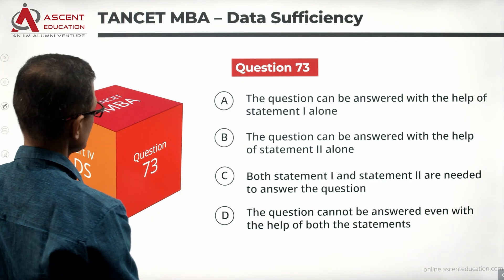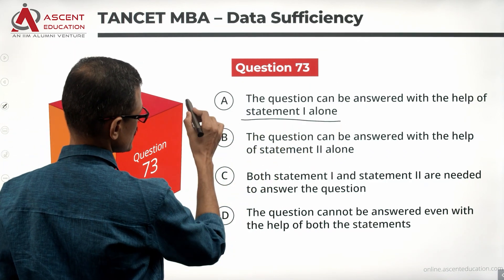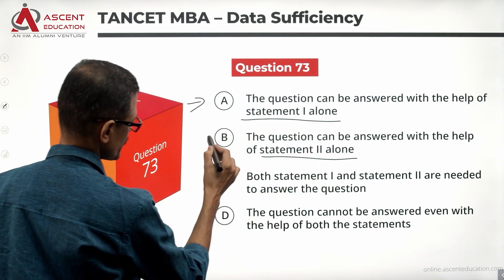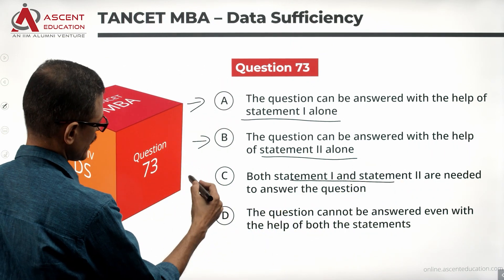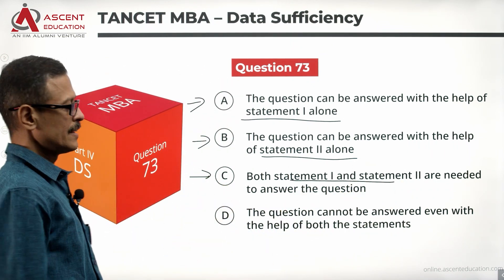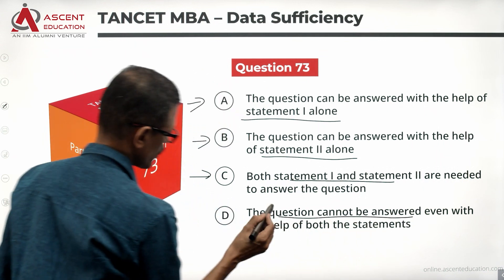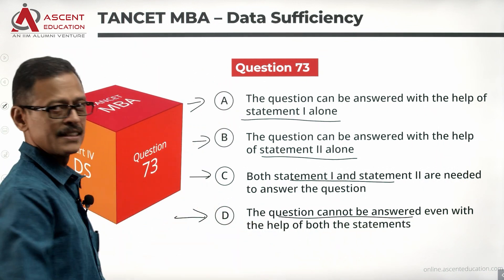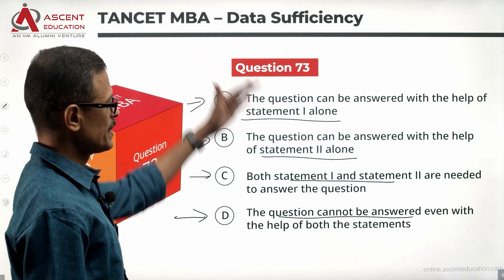Take a look at the statements and answer options. Statement one alone is sufficient is answer option A. Statement two alone is sufficient is answer option B. Together, one and two are required, then the answer option is C. Even with both statements, if we are not able to answer, data is insufficient, the answer option is D.